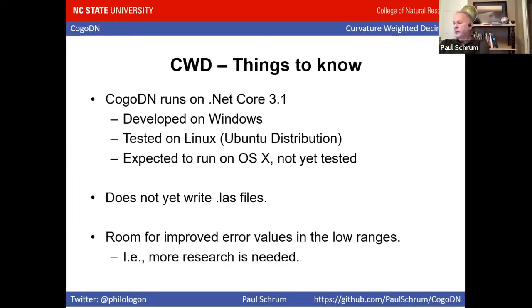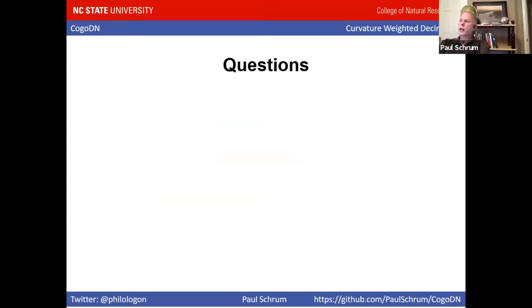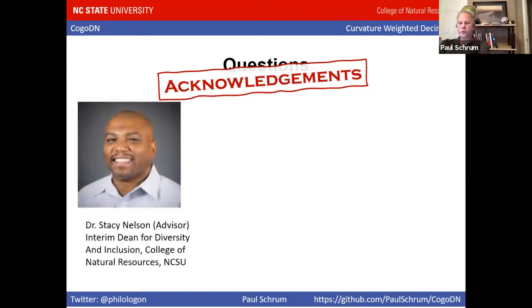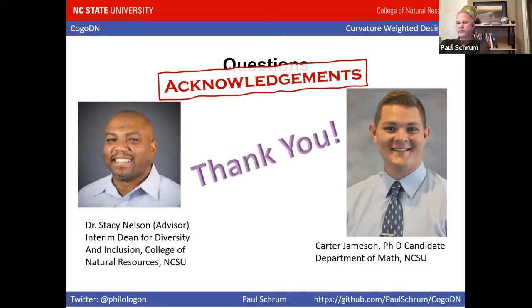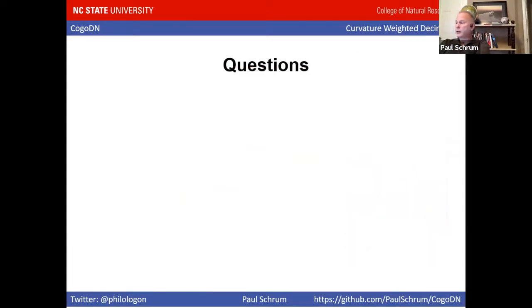There's also room for improvement in the algorithm, such as making those low decimation values more competitive against random decimation — in other words, more research is needed. I want to thank my advisor Dr. Stacey Nelson for all his help, and also my friend Carter Jamison, a PhD candidate in the Department of Math at NC State. Carter spent hours and hours with me over the past year meeting in person and on Zoom, keeping me from using equations and concepts that just don't work.